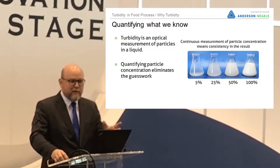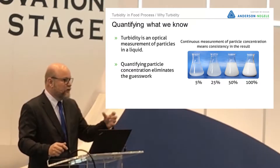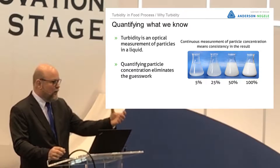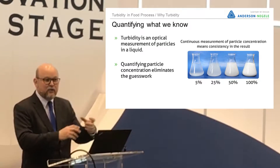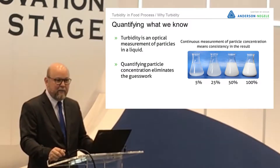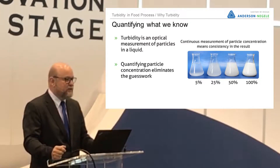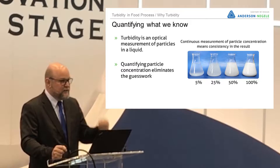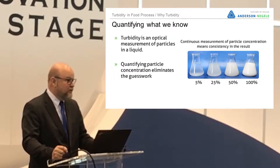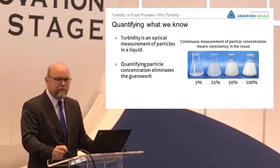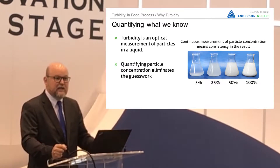Quantifying what we know — everybody's done it at home. You take a glass, maybe you mixed a drink or a juice, and you look at it and you qualify it by saying that looks strong or that looks weak. What you're actually doing is making an optical judgment — a measurement of the turbidity of that product. Turbidity as a measurement is the effect that particles present in a solution have on a light beam. When we do that qualitatively with our eyes, we're looking at whether light passes through that glass or whether the particles actually stop it.